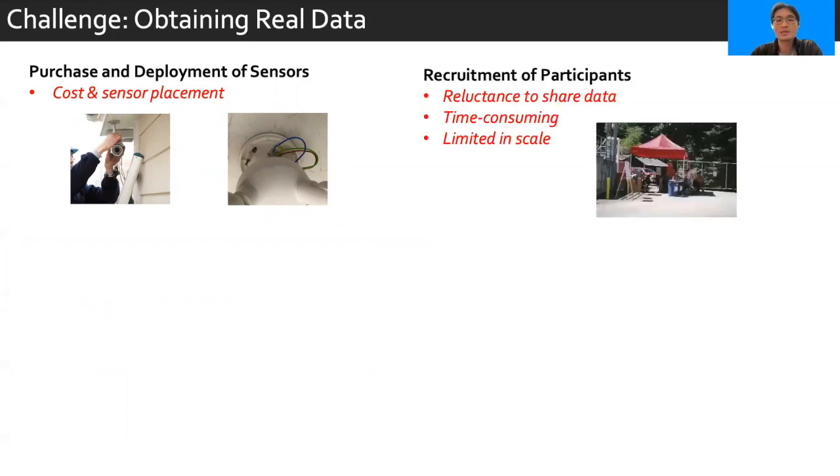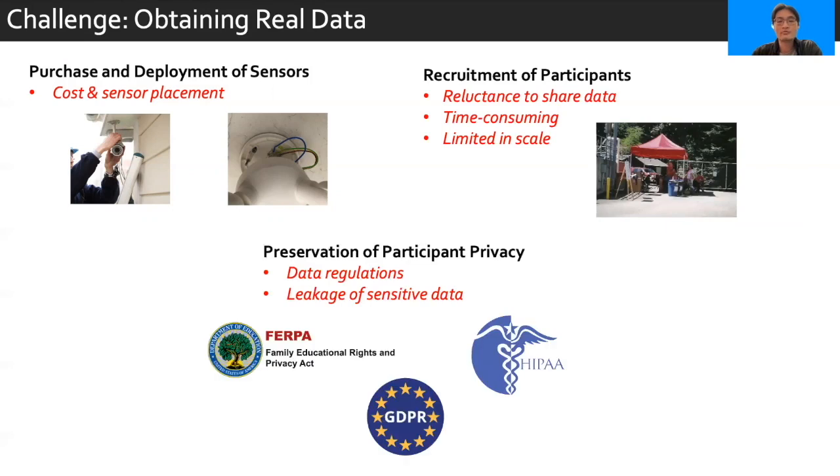Then, supposing that the building has been sensorized, recruiting participants to volunteer their data can be difficult. Participants can be reluctant to share data if they don't trust the collecting party. In addition, collecting data can be time-consuming for the participant, and therefore the resulting dataset will oftentimes be limited in scale. This is also intimately tied with the preservation of participant privacy. Even if real data is collected, data regulations and policies can prevent the sharing of such data, due to the risk of leaking private sensitive information about the people within the smart space.